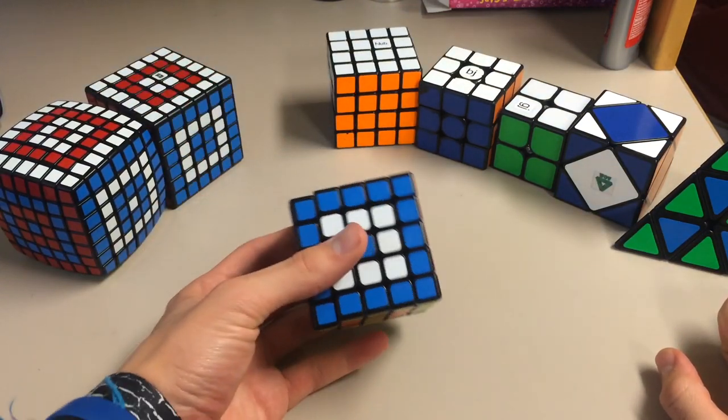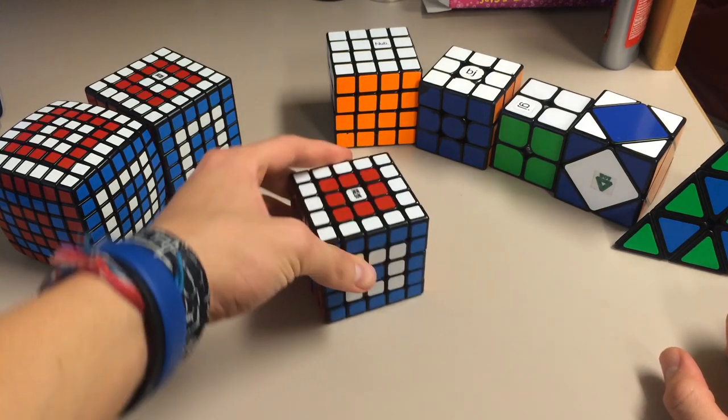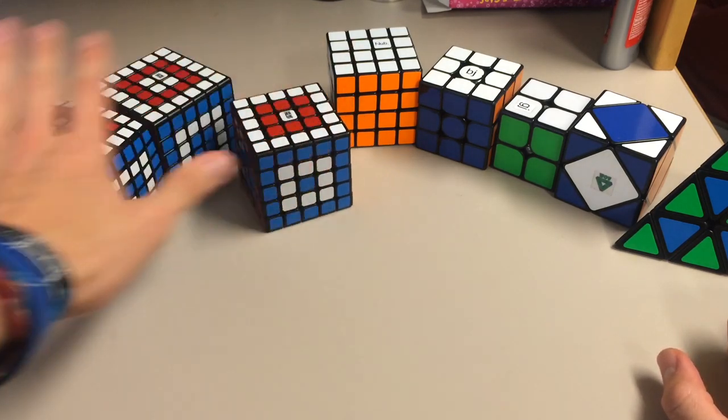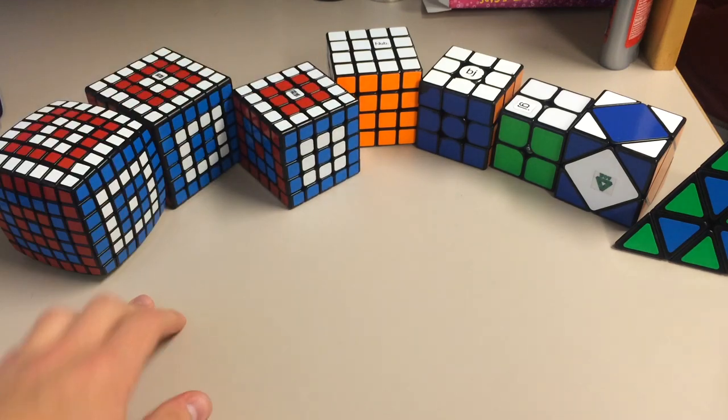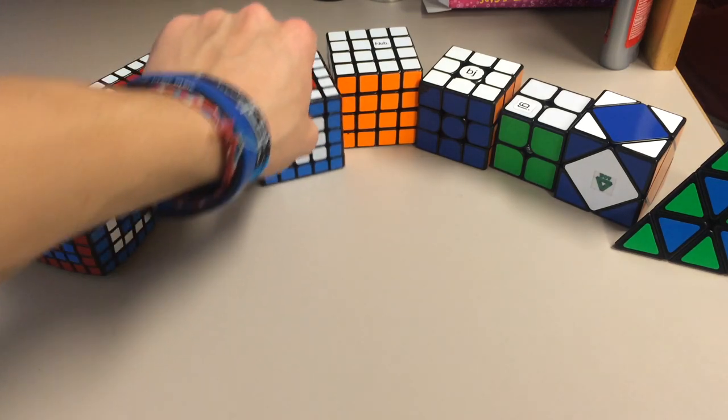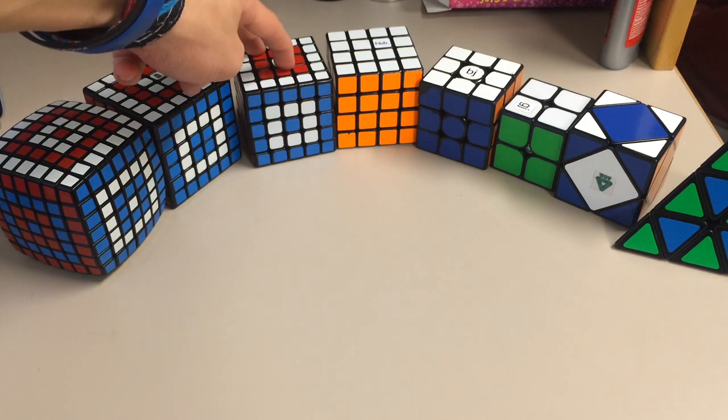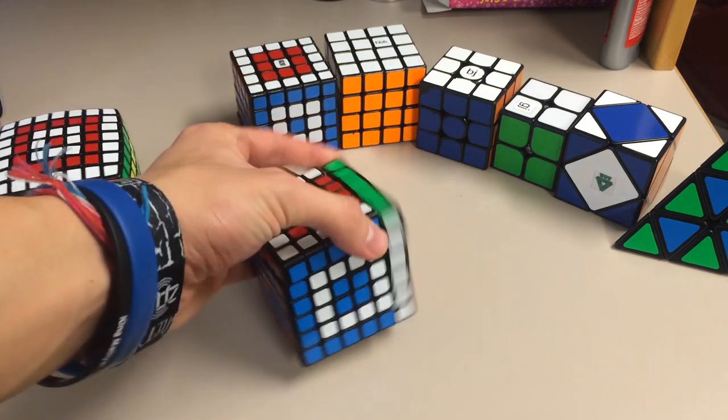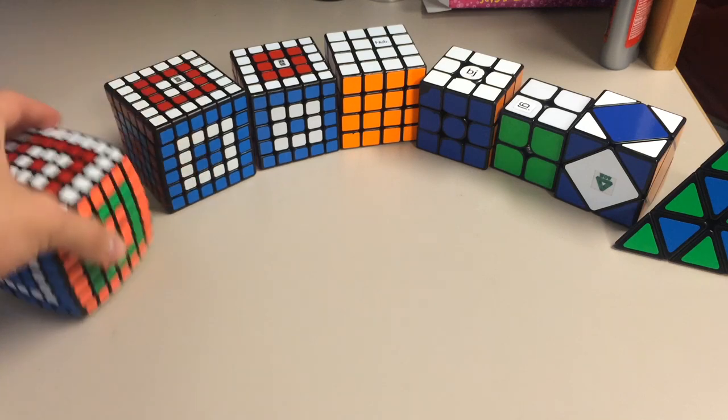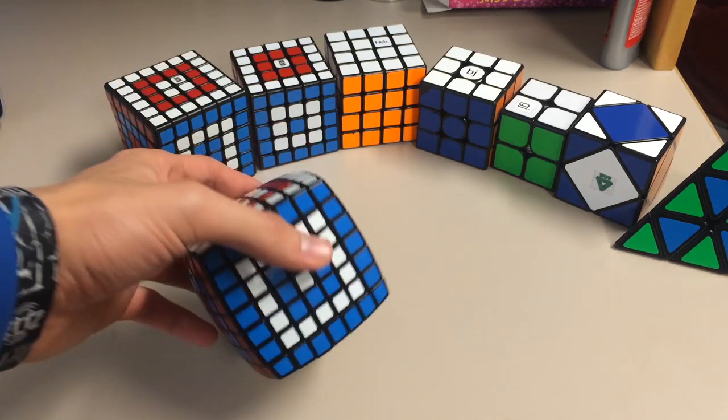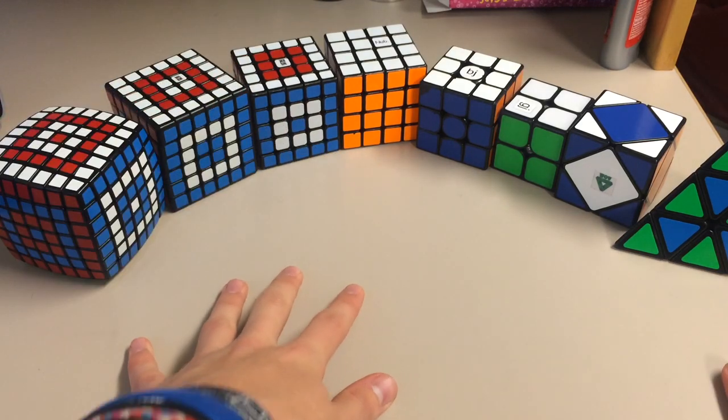For my main 5x5, it is the Huachuang. I'm not great at anything 5x5 or above, so this is going to be a little bit quicker, but 5x5 is the Huachuang. I have the Aoshuang, but this is more stable. I have the Aoshi, the 6x6 by Moyu, and the Aofu, which is the Moyu 7x7. They're my main 2 through 7.